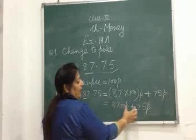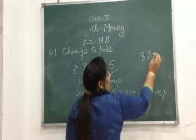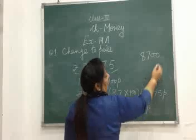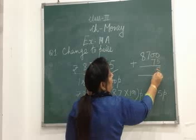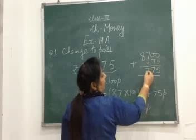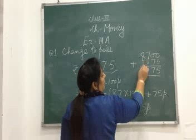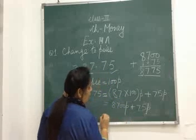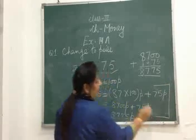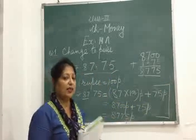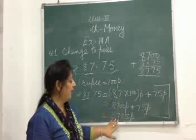अब हमें इस paisa में ये बने paisa plus कर देने हैं. 8,700 write करो, plus 75. Add them: 7 के लिए कुछ नहीं तो 0, 8 के लिए 0. So this much paisa will be the answer. This is called conversion — when rupees and paisas are given, convert them into paisas.